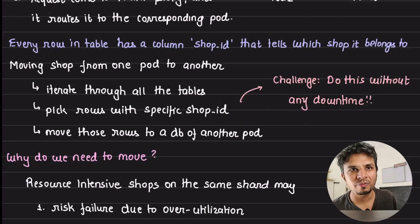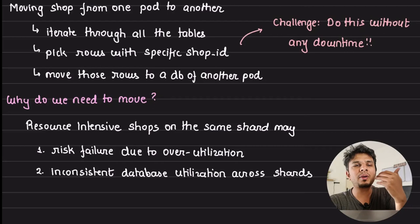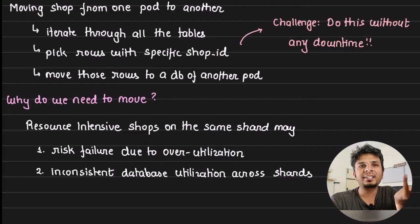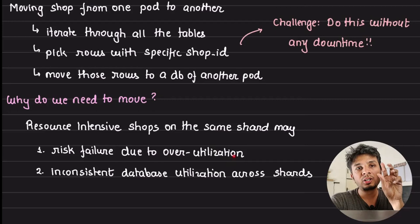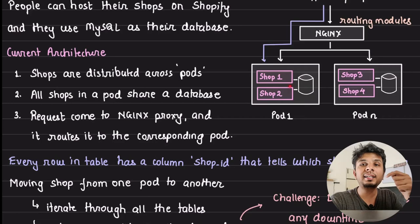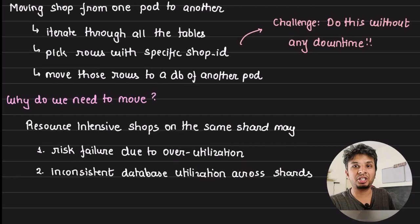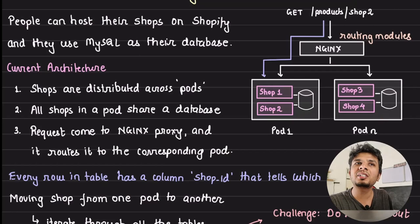There are two critical reasons to move shops between pods. First, risk of failure due to over-utilization: excessive load on one shop makes the database piping hot, increasing the probability of infrastructure failure — and one shop taking down others is unacceptable. Second, inconsistent database utilization: one shard operating at 100% capacity while others run at 5–10% is wasteful; you want near-equal load distribution across your infrastructure.